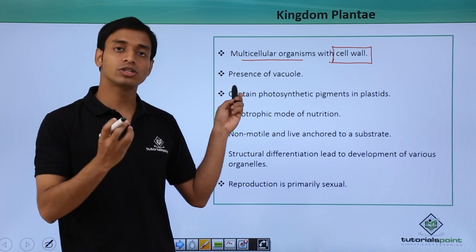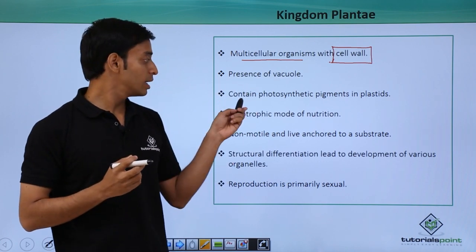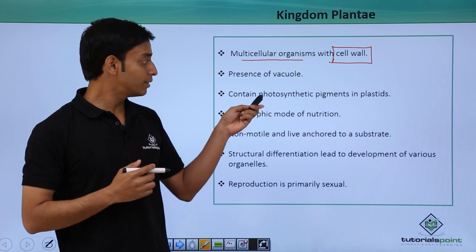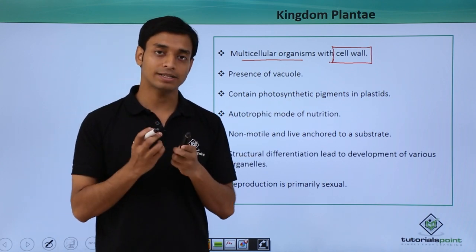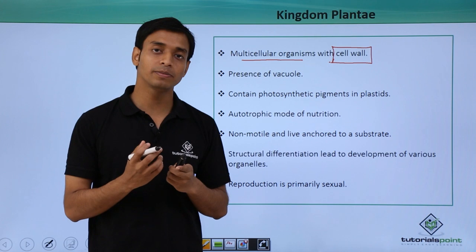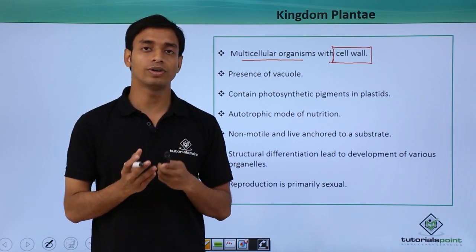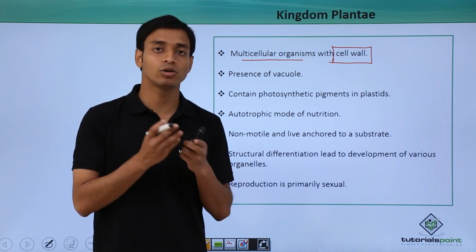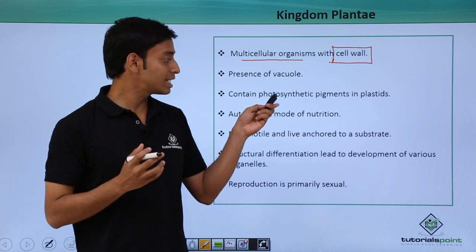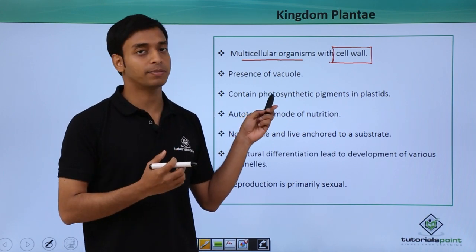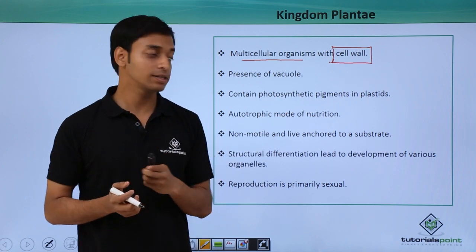They have the presence of vacuoles inside their cells. They also contain photosynthetic pigments which are present inside the plastids — mostly chlorophyll, with different groups like chlorophyll A, chlorophyll B, and chlorophyll C. These photosynthetic pigments are present inside the plastids of the plants.